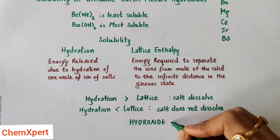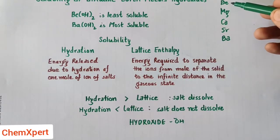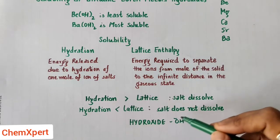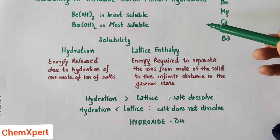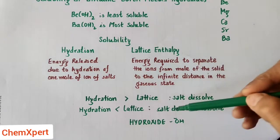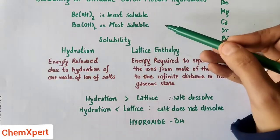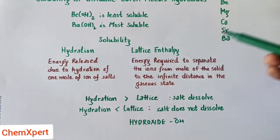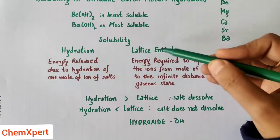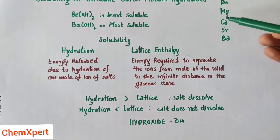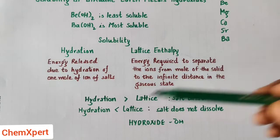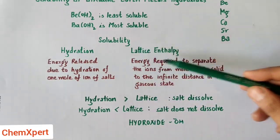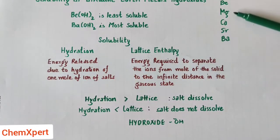In the case of hydroxides (OH⁻), when we move down the group, the size of the cation increases whereas hydroxide remains constant. As we move down the group, lattice energy decreases and hydration energy also decreases, because the size increases and overall charge density decreases. However, the decrease in lattice enthalpy is much more than the decrease in hydration enthalpy. So as we move down the group, hydration enthalpy becomes greater than lattice enthalpy, hence solubility increases down the group.